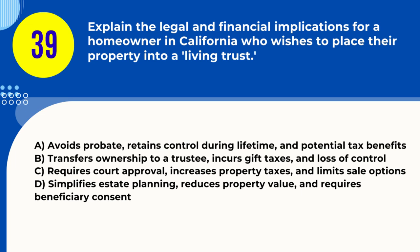Question 39. Explain the legal and financial implications for a homeowner in California who wishes to place their property into a living trust. A. Avoids probate, retains control during lifetime, and potential tax benefits B. Transfers ownership to a trustee, incurs gift taxes, and loss of control C. Requires court approval, increases property taxes, and limits sale options D. Simplifies estate planning, reduces property value, and requires beneficiary consent. Answer: A. Avoids probate, retains control during lifetime, and potential tax benefits. Explanation: Placing property in a living trust can avoid probate, allow control during the owner's lifetime, and offer tax benefits.